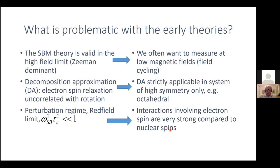Then we have another problem, known as the decomposition approximation, which says that the rotational correlation time and the electron spin relaxation time have to be uncorrelated processes. In order for this approach to be valid, rotation and electron spin relaxation have to be uncorrelated, which is problematic if you have systems of less than octahedral symmetry. For octahedral symmetry it is fine, but many systems, such as contrast agents, do not follow the decomposition approximation.